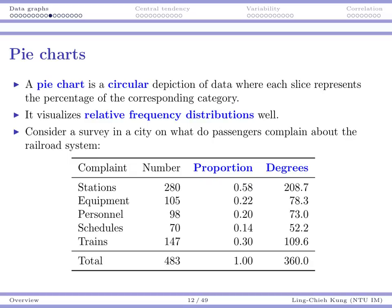Let's do an example. Suppose we have a survey in a city where passengers complain about the rail system. 280 consumers have complaints about stations, 105 consumers have complaints about equipment, and so on. What we want to do is intuitively illustrate the relative size of each category.